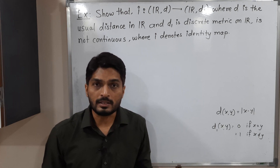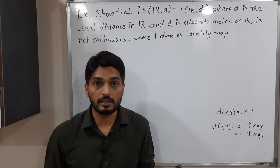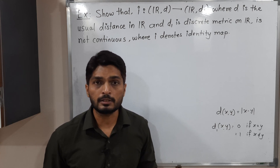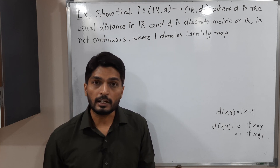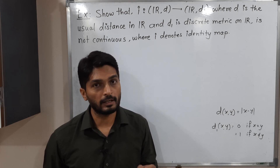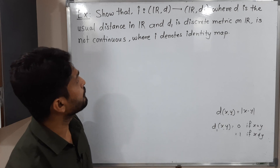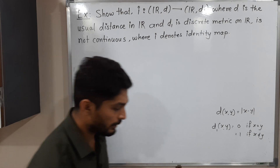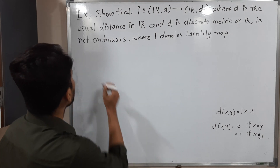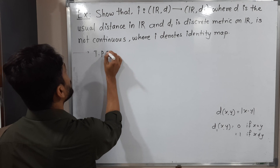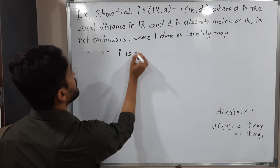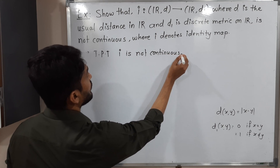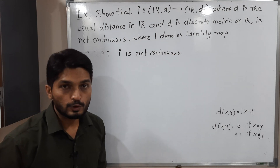There is a well-known result: in a discrete metric space, every set is both open and closed. You can take any arbitrary subset of that metric space and it is definitely both open and closed. What we have to prove is that the identity map I is not continuous.